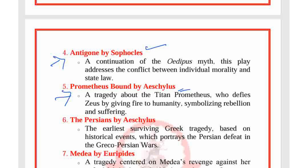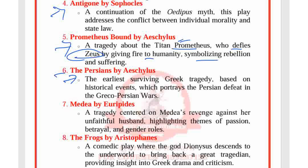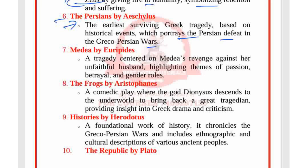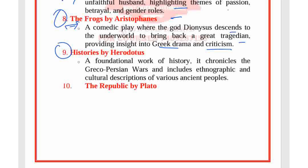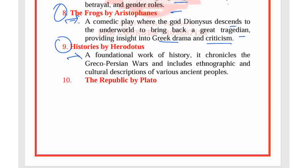Prometheus Bound by Aeschylus is a tragedy about the Titan Prometheus, who defies the gods by giving fire to humanity, symbolizing rebellion and suffering. The Persians by Aeschylus is the earliest surviving Greek tragedy, based on historical events, portraying the Persian defeat in the Greco-Persian War. Medea by Euripides is a tragedy centered on Medea's revenge against her unfaithful husband. The Frogs by Aristophanes is a comedic play where the god Dionysus descends to the underworld to bring back a great tragedian, providing insight into Greek drama and criticism. Histories by Herodotus chronicles the Greco-Persian Wars with ethnographic and cultural descriptions of various ancient peoples.